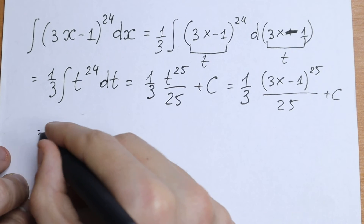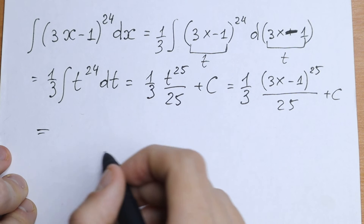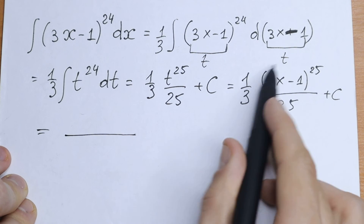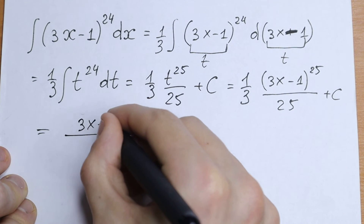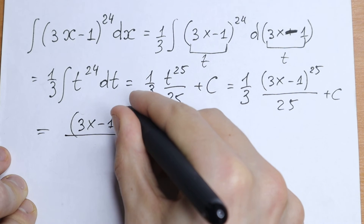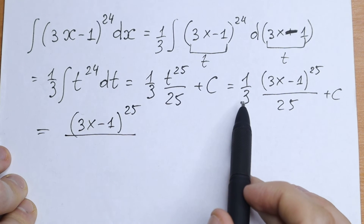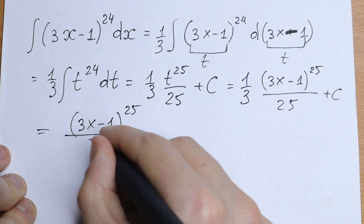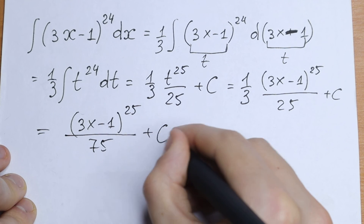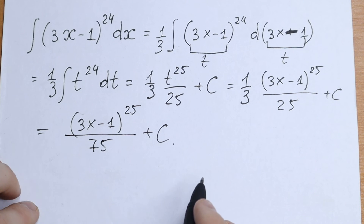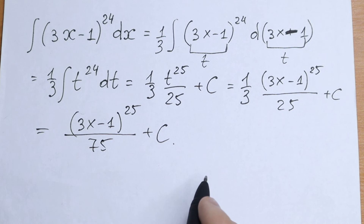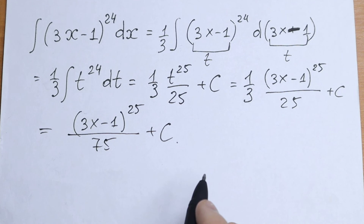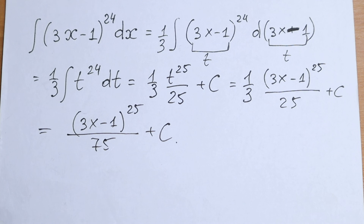The last step: in our denominator, multiplying 3 by 25 we will have 75. So the final answer is (3x-1) to the 25th power divided by 75, plus c. And this is our integral. If you have any questions, write them in the comments. Write your suggestions and comments. Thank you for watching and subscribing. See you in the next videos.